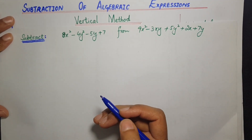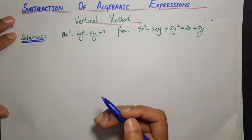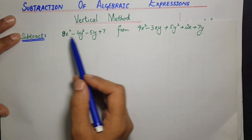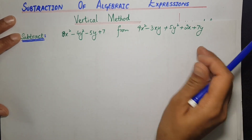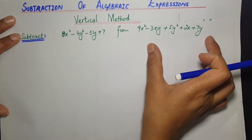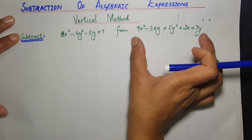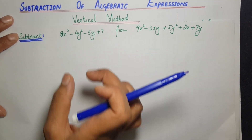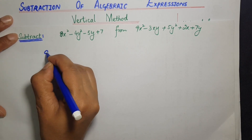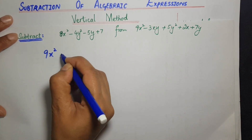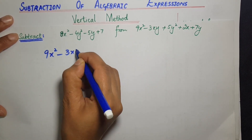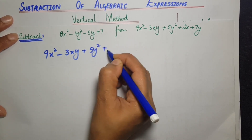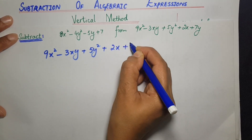اب ایک اور sum کو vertical method سے subtract کرنا سیکھتے ہیں۔ اس question کو غور سے سمجھنے کی ضرورت ہے: subtract this expression from this expression۔ کرنا یہ ہے کہ پہلے یہ والی expression لکھی جائے گی اور اس کو اس میں سے minus کریں گے۔ first expression as it is لکھ لیتے ہیں: 9x² minus 3xy plus 5y² plus 2x plus 7y۔